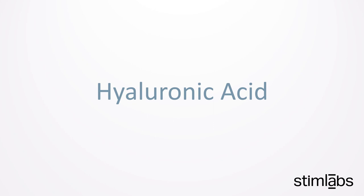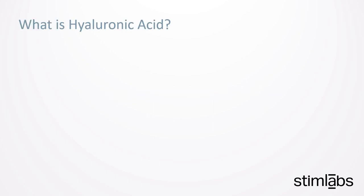Thanks, Chas. Hello, everyone. Thanks for tuning in. As Chas mentioned, our topic for today is hyaluronic acid. So what is hyaluronic acid? Hyaluronic acid, which we also call HA, is a type of carbohydrate chain made up of individual disaccharide units called a glycosaminoglycan.